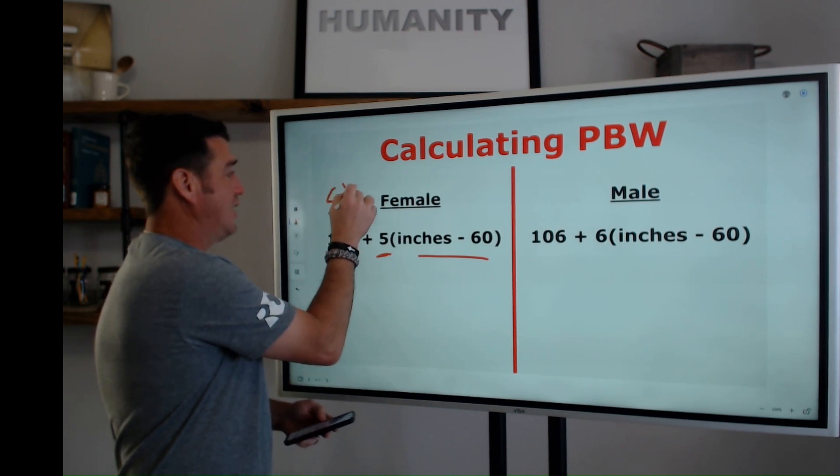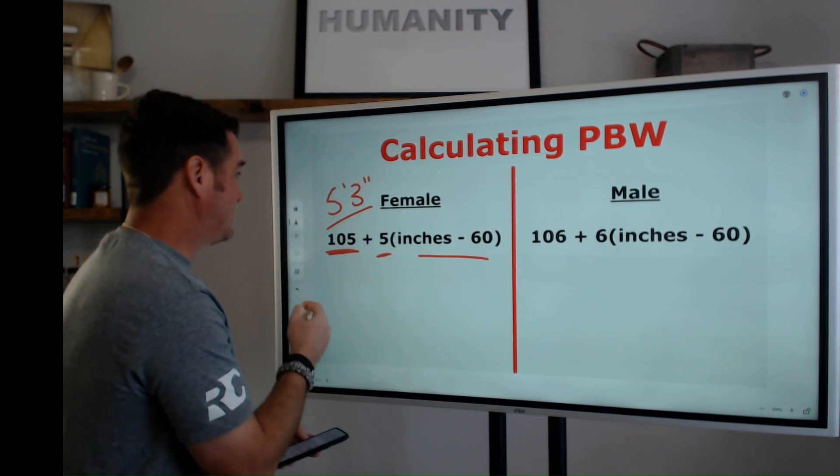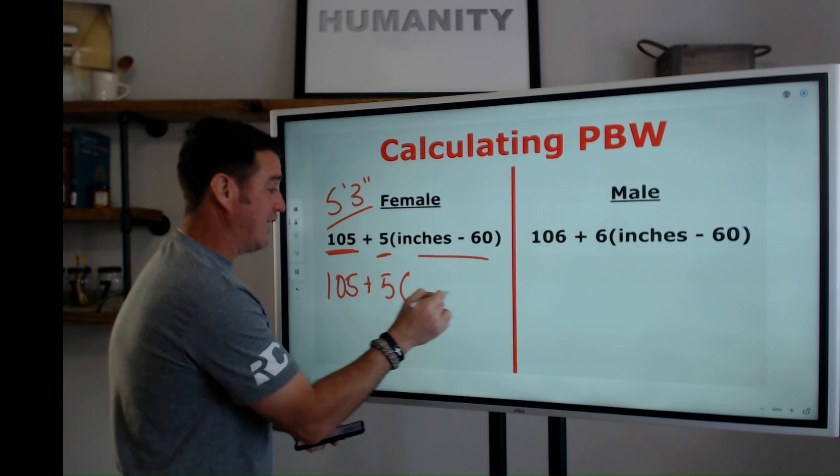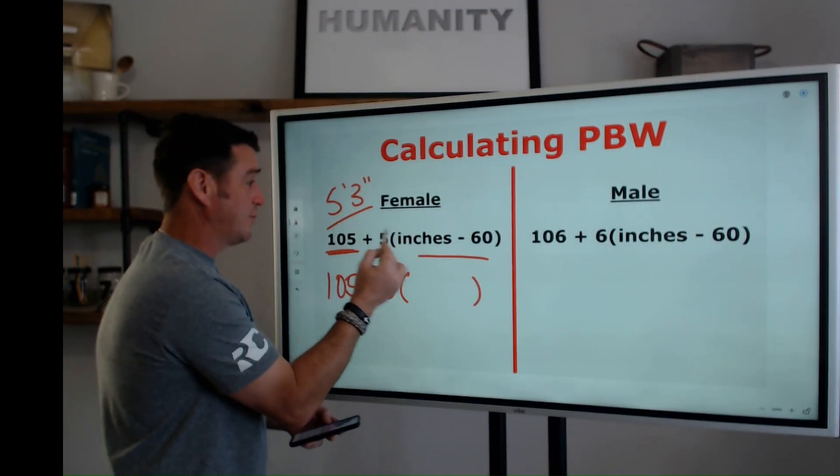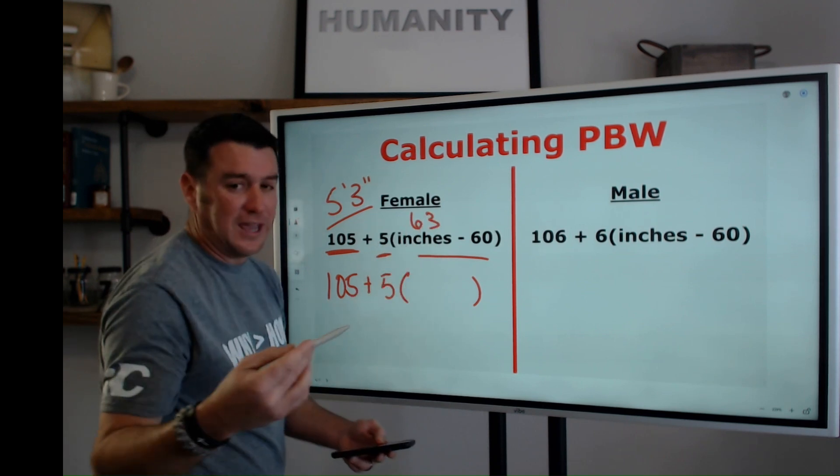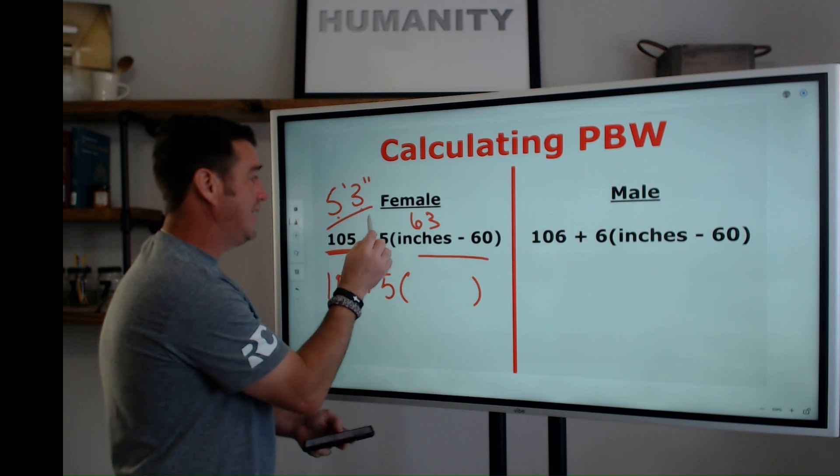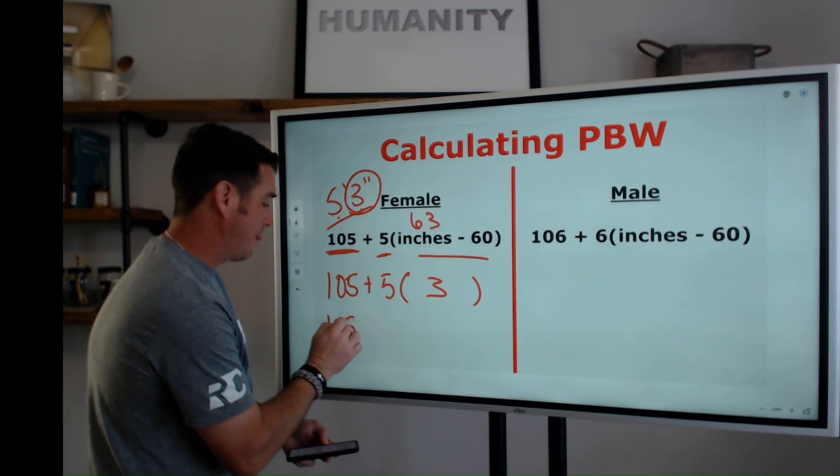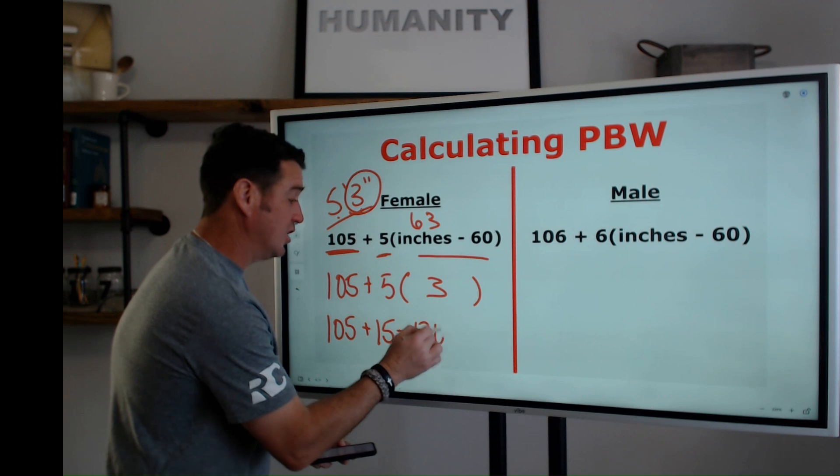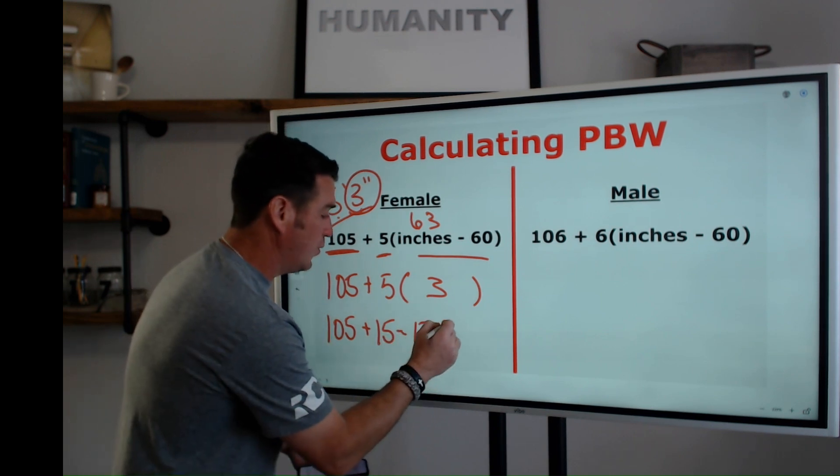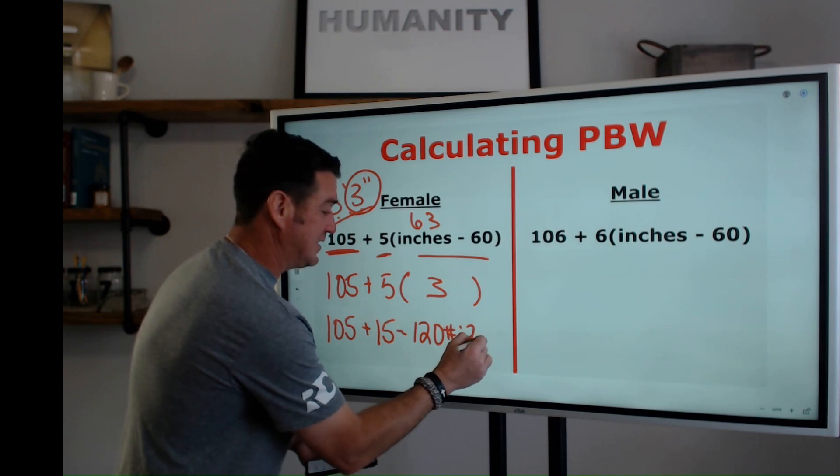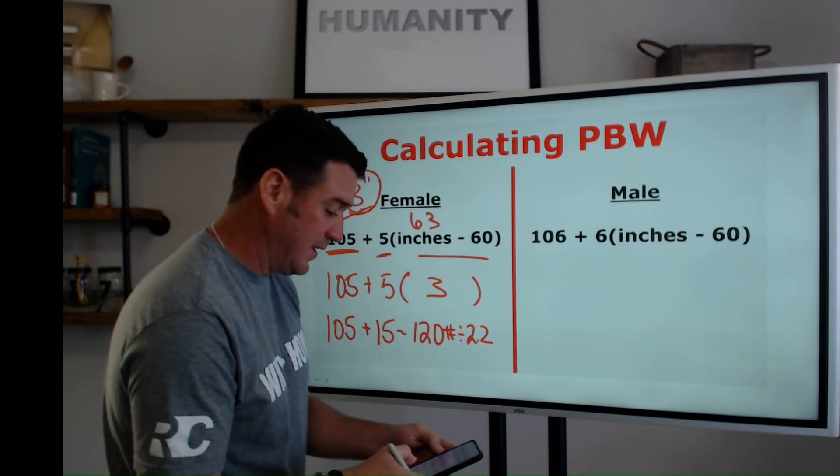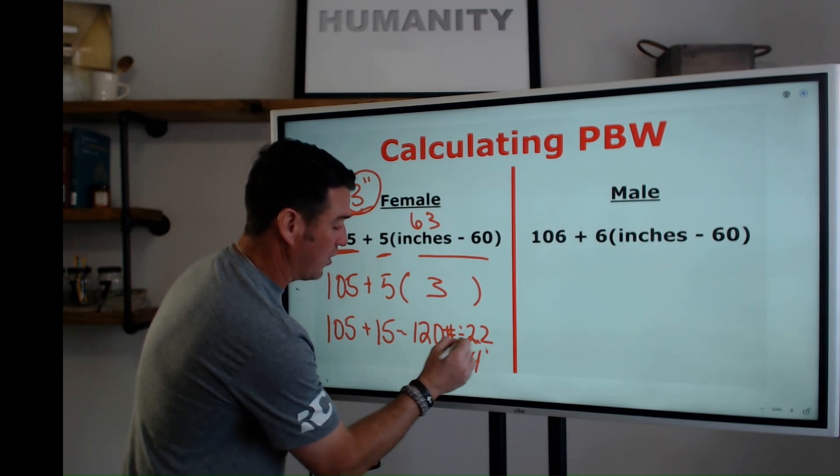If we recognize we have the 5'3" female, and we say 105 plus 5 for every inch over 60. 5 times 12 is 60 plus 3 is 63. But we also can, without doing any math, look at it and go, she's 5'3". That means she's 3 inches above 5 feet. So this is 105 plus 15. This person is 120 pounds. Now, to get this into kilograms, you divide it by 2.2. So we are 120 pounds divided by 2.2 gives us 54 kilograms.